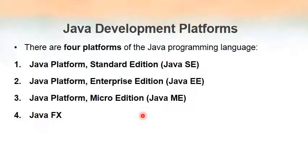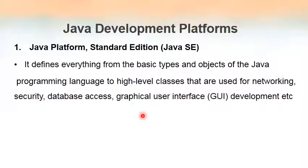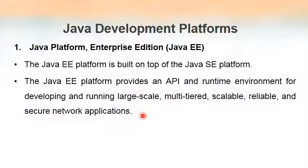There are four platforms for Java: Standard Edition, Enterprise Edition, Micro Edition, and JavaFX. We'll discuss Standard Edition and Enterprise Edition. Java Standard Edition is the basic Java programming language — it includes all tools required to develop Java programs for networking, security, database access, and graphics. Enterprise Edition is built on top of Standard Edition and is mainly used for developing network applications.